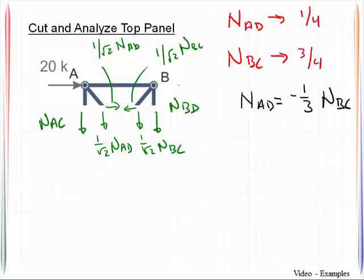Where does the negative come from? Well we know that one of those members is going to be in tension, one is going to be in compression. So there's the opposite in sign. We also recognize that the ratio of one-third comes from here, the numerators.